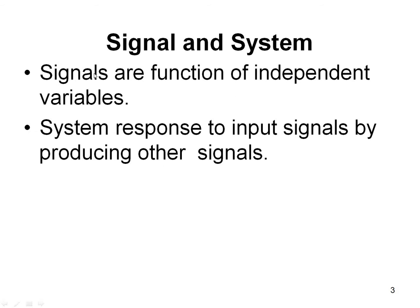Before going into the details of the different types of elementary signals, let me first define signals and systems in detail. Signals are nothing but the functions of independent variables. Functions of independent variables include time t for a one dimensional signal. Based on the number of independent variables used, we have different types of signals: one dimensional signals, two dimensional signals and so on. A system will respond to the input signal, process it, and produce an output signal.